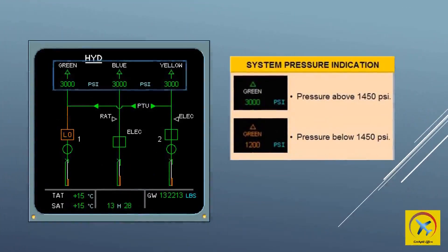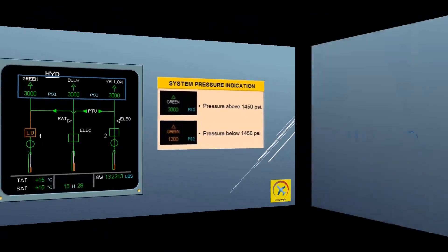System label displays white when hydraulic pressure is normal at 3000 psi, and displayed as an amber color when the pressure is low, below 1450 psi. Whereas system pressure displays green when hydraulic system pressure is normal and displayed as an amber color when the pressure is low.